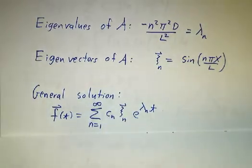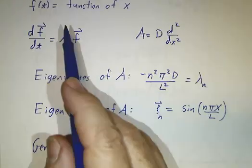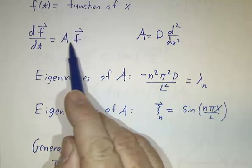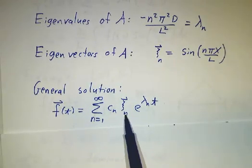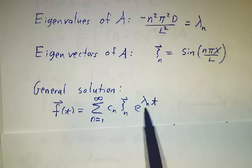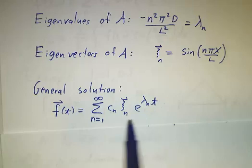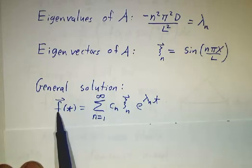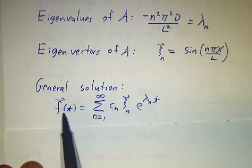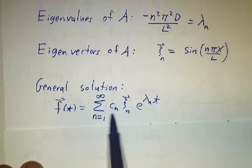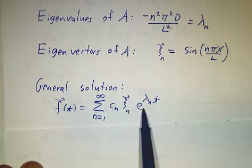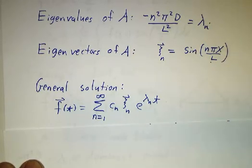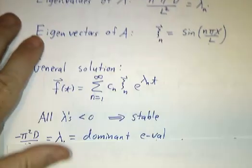So the way to solve an equation derivative equals matrix times x is you write a linear combination of the eigenvectors times an exponential of the eigenvalue times time. It's the same thing for, if you work in a big space, our vector f as a function of time, it's going to be a linear combination of the eigenvectors times e to the λt. Where here's λ and here's the eigenvector.